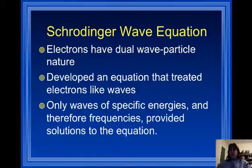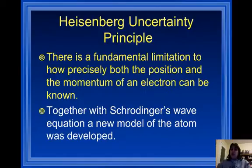There's another scientist. His name was Werner Heisenberg. And Werner Heisenberg stated that there's a fundamental limitation to how precisely both the position and the momentum of an electron can be known. The mere act of looking for the electron actually changes its position and its velocity within the atom.